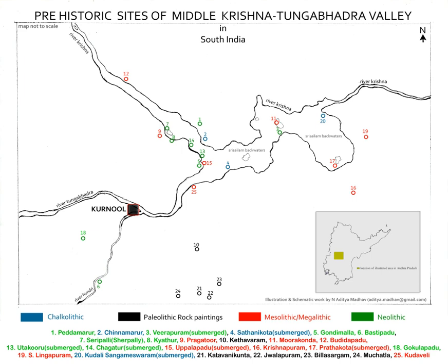The Satavahana empire was a royal Indian dynasty based from Amaravati in Andhra Pradesh as well as Janur and Prathisthan in Maharashtra. The territory of the empire covered much of India from 300 BCE onward. The most liberal estimates suggest that it lasted about 450 years, until around 220 CE. The Satavahanas are credited for establishing peace in the country, resisting the onslaught of foreigners after the decline of the Mauryan Empire. Satavahanas started out as feudatories to the Mauryan dynasty but declared independence with its decline.